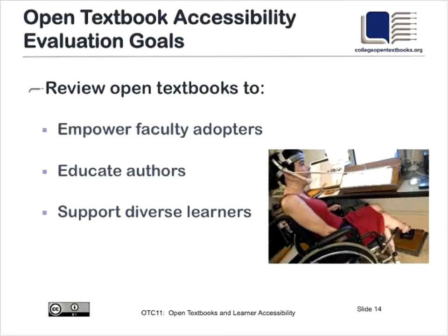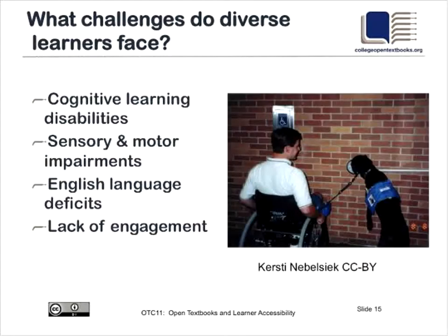This last summer we worked with Virtual Ability to evaluate open textbooks. Our goals were to empower faculty adopters so they could make good choices — understanding how accessible an open textbook would be for a student before selecting it. That helps to support the diverse learners that attend our community colleges and other higher education institutions. A second equally important piece was the education of authors, to help them write open textbooks correctly the first time so those resources are available for all learners.